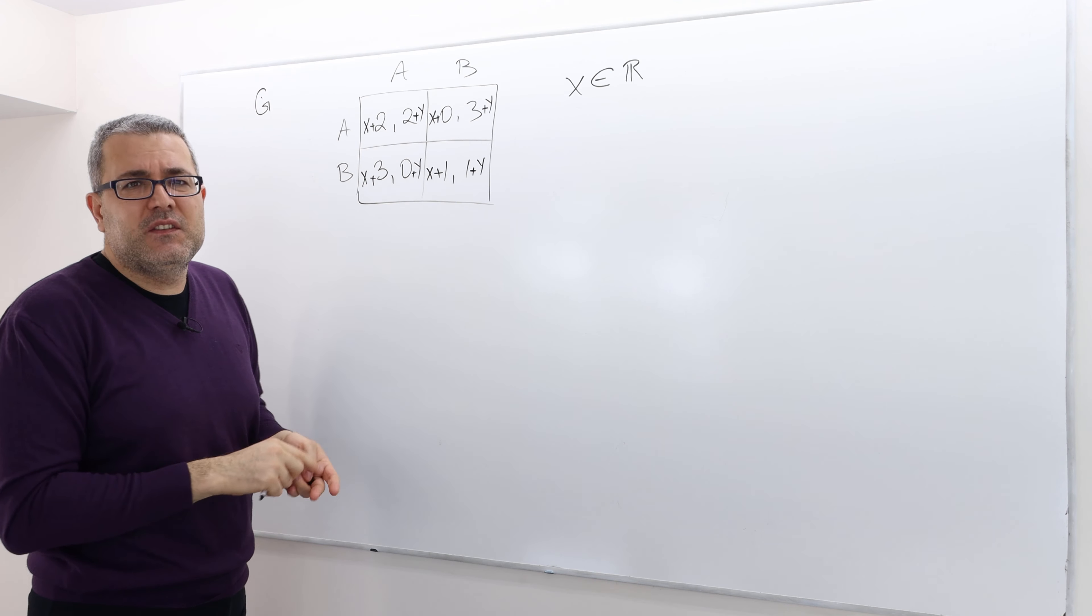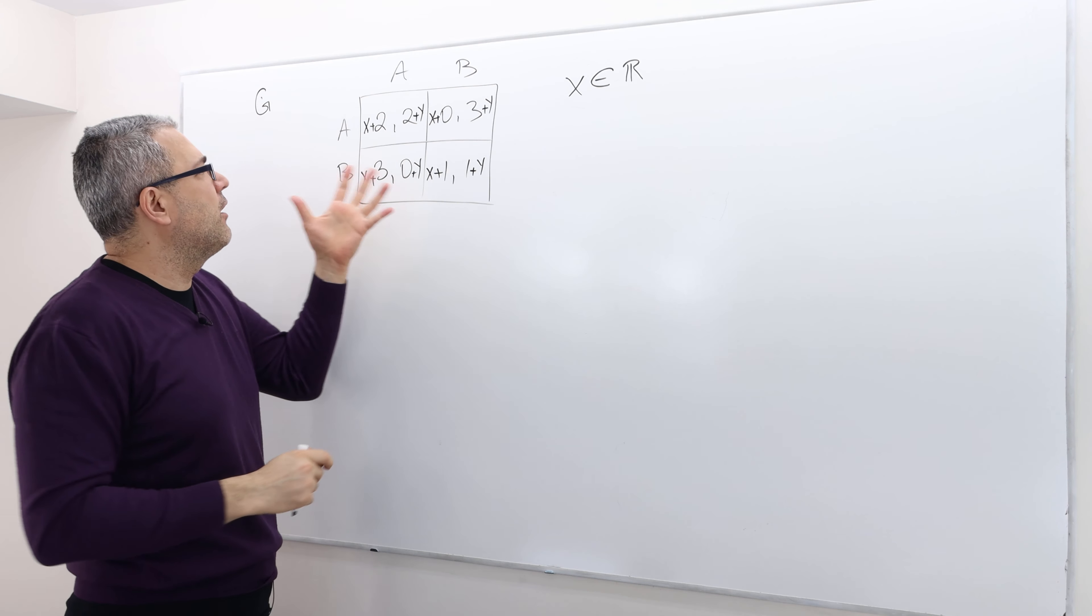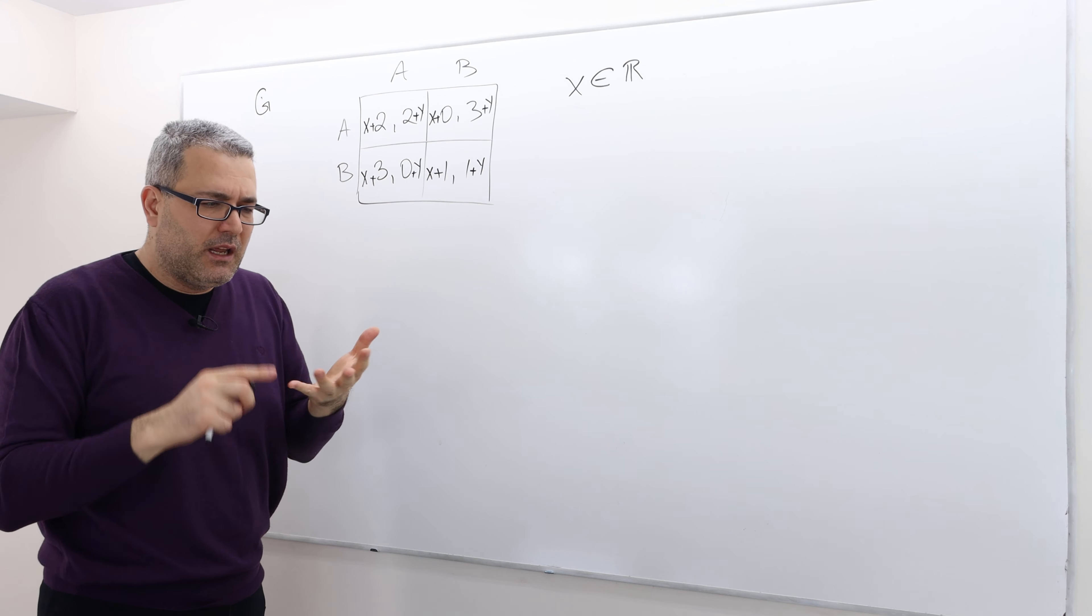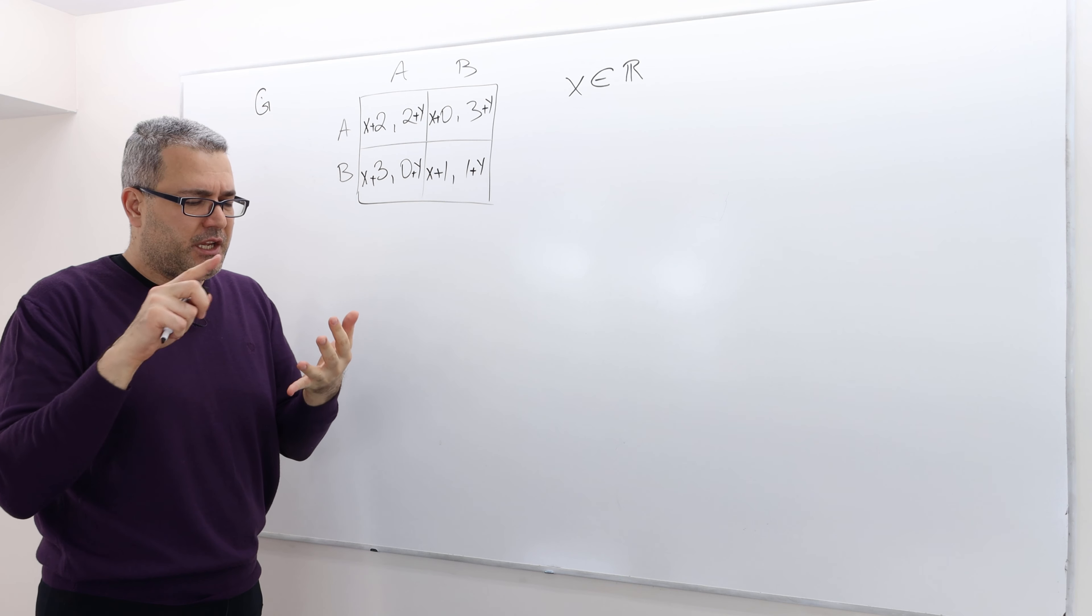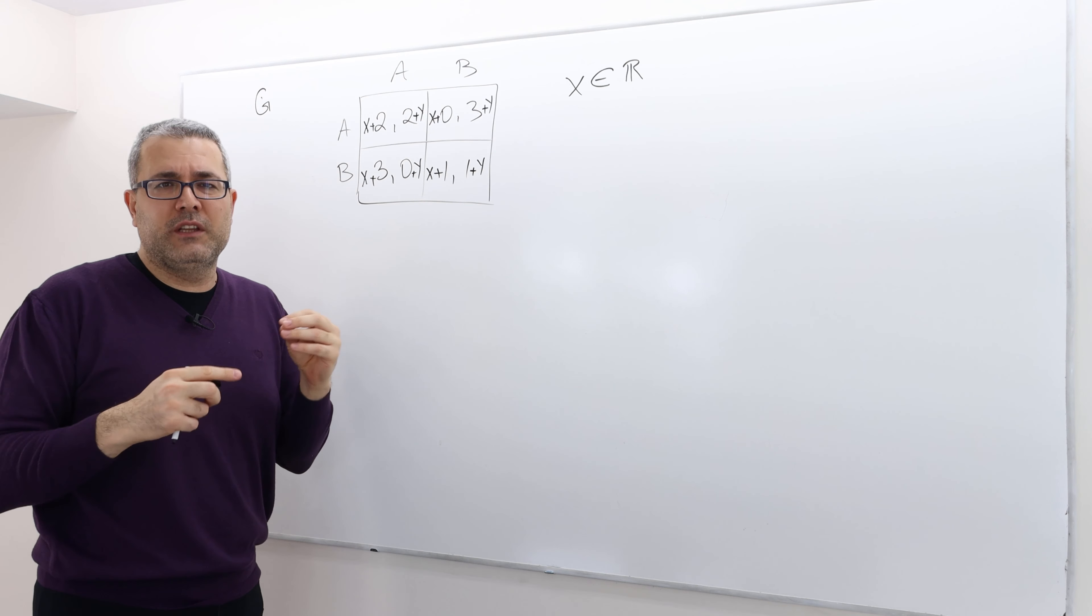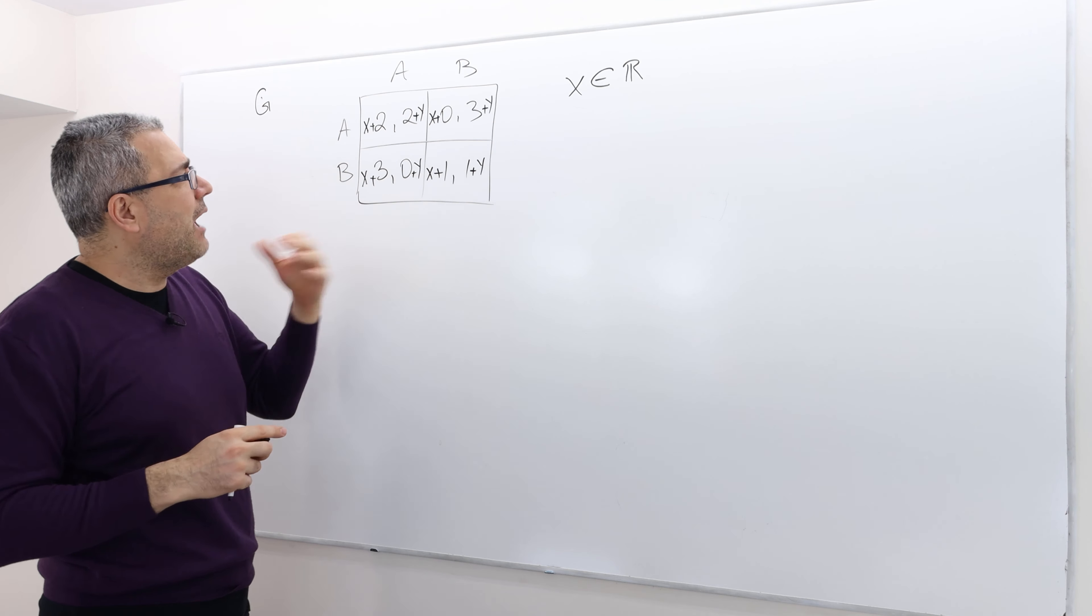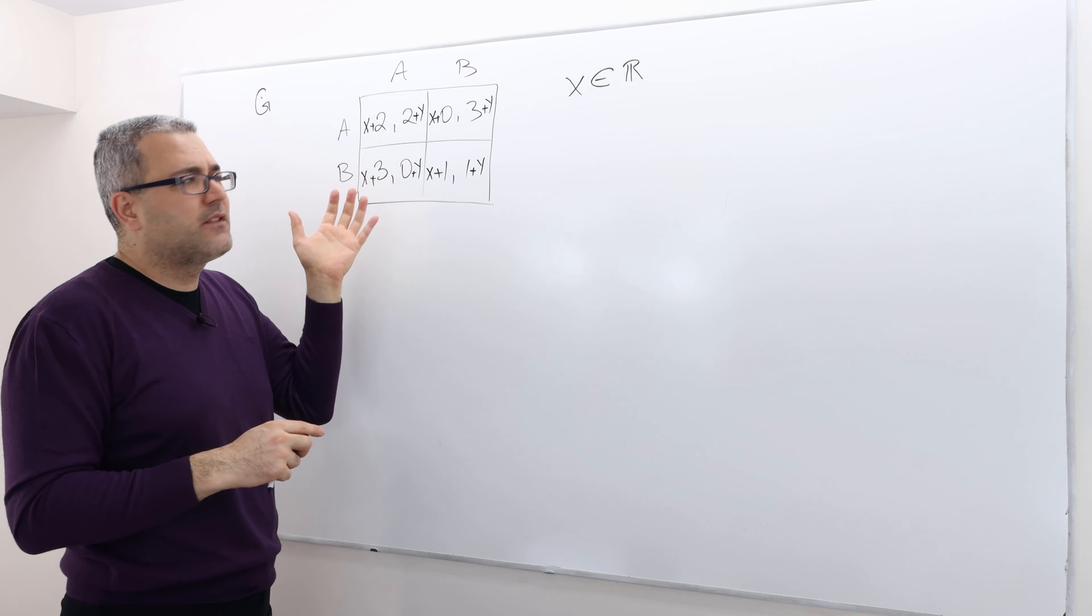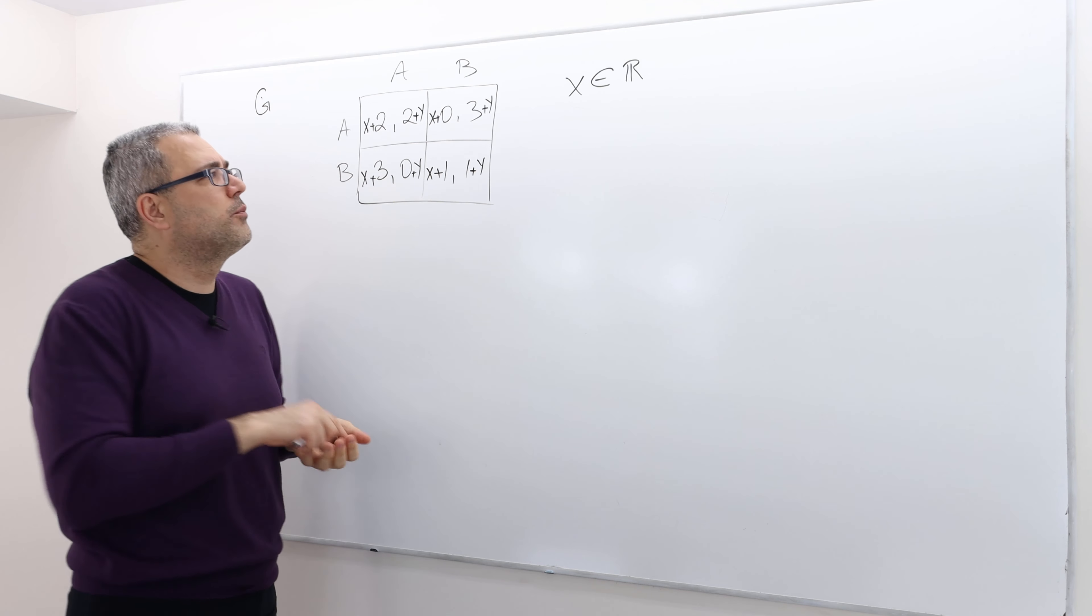So the game basically becomes, the game payoff becomes this. The set of players did not change. The set of strategies did not change. The payoffs only changed here. And what happened is we add X to player one and Y to player two.